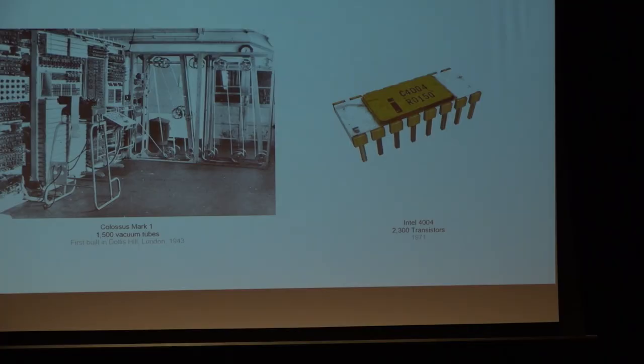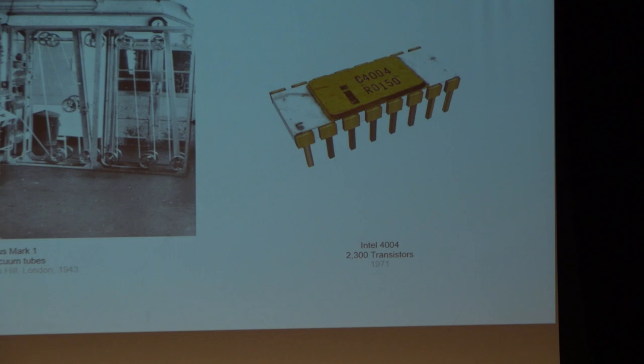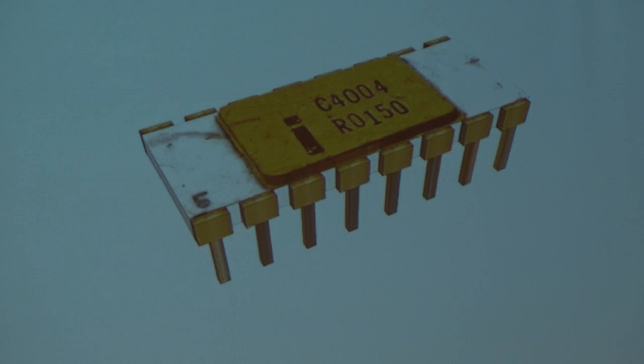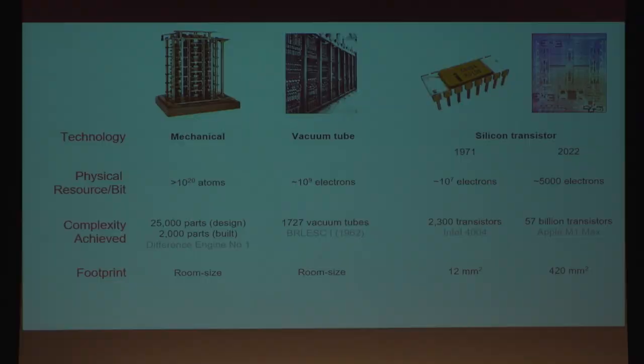This computer, called the Colossus, used 1,500 vacuum tubes, and it really set the stage for a further two decades of development of computers based on this way of encoding information in vacuum tubes or valves. But later computers did not involve many more vacuum tubes — they still stayed around the same sort of number. There was still this fundamental problem in scaling up the technology. The profound revolution in computing that shaped our society for the last 50 years was made possible by encoding information within the states of silicon transistors. The silicon integrated circuit went from a proof of concept in the late 1950s to the world's first commercial integrated circuit in the early 1970s, completely transforming computing by bringing down the power, size, and footprint of these technologies.